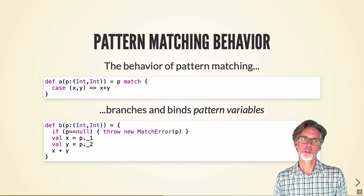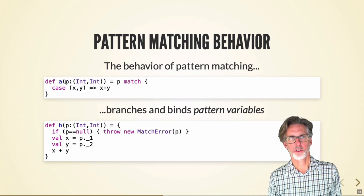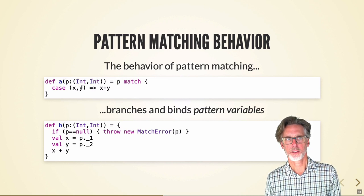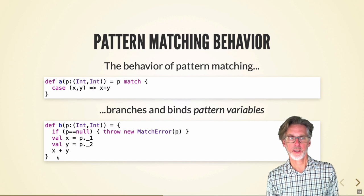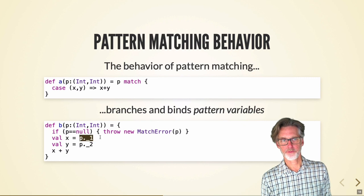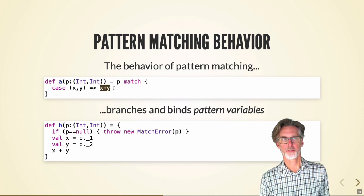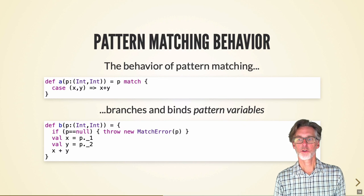With tuples I can use pattern matching to get values out. Here's a function that takes a pair of integers and matches on them to add them together. Scala compiles this pattern match as follows: first it checks if the pair is null and throws an exception if so; otherwise it grabs the first and second elements into the variable names you've chosen — here x and y — and then executes the body of the match.